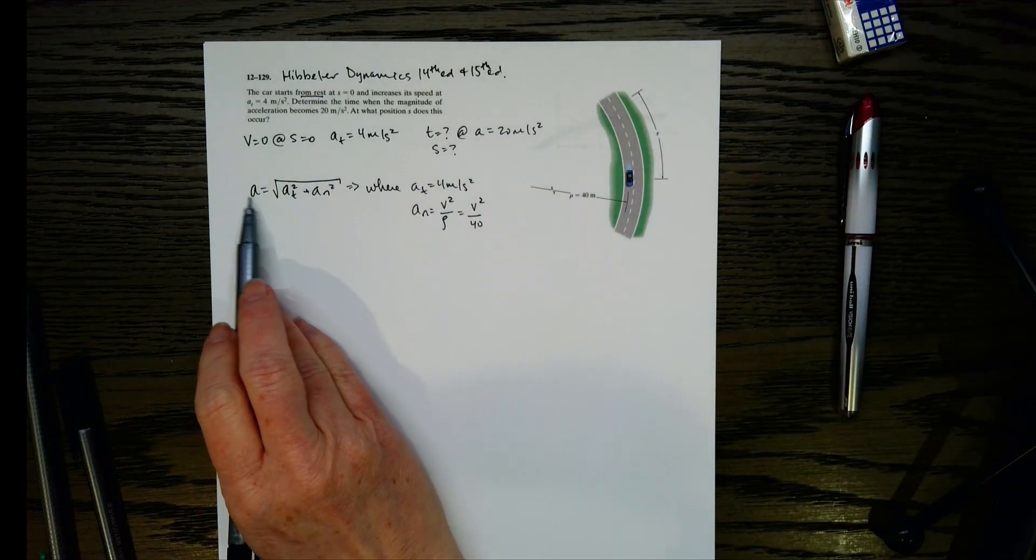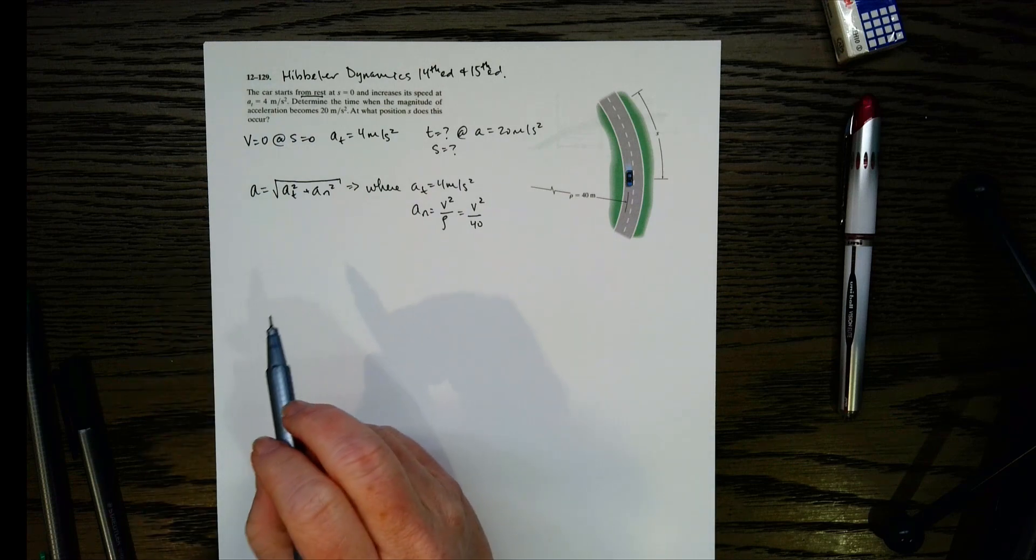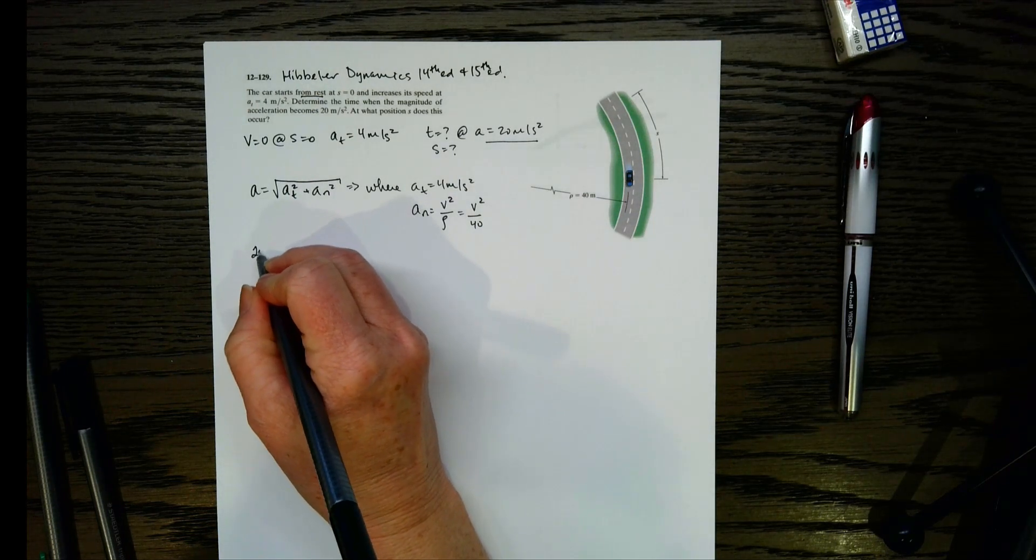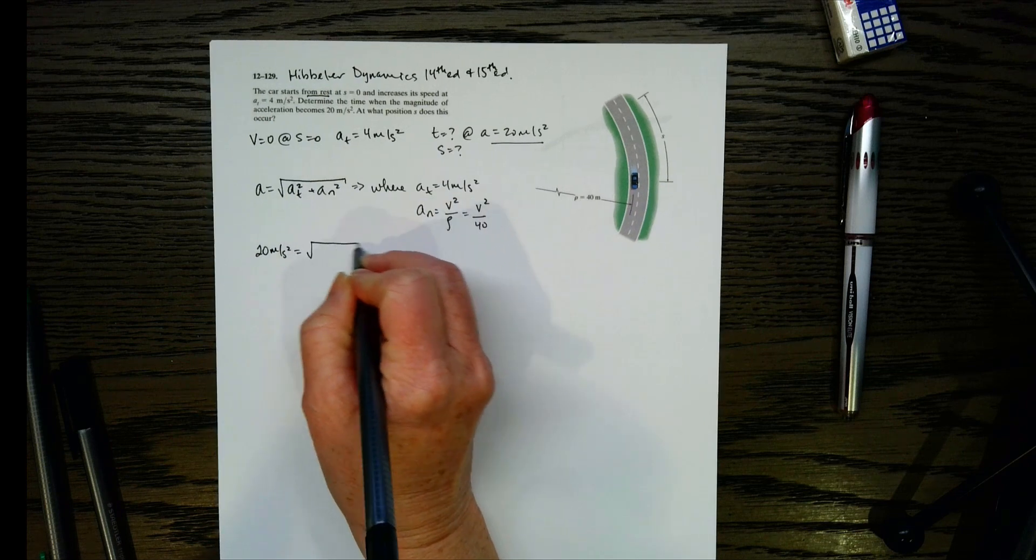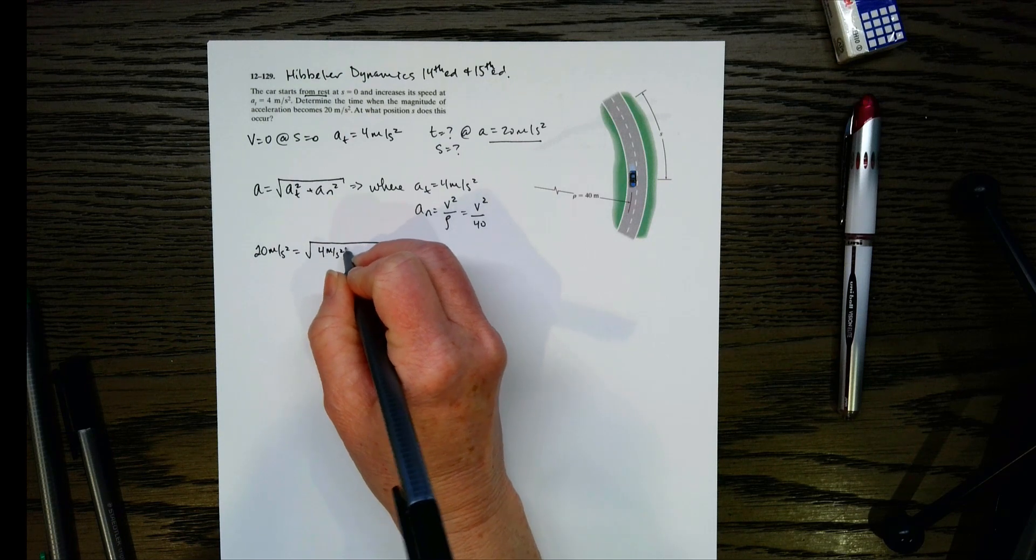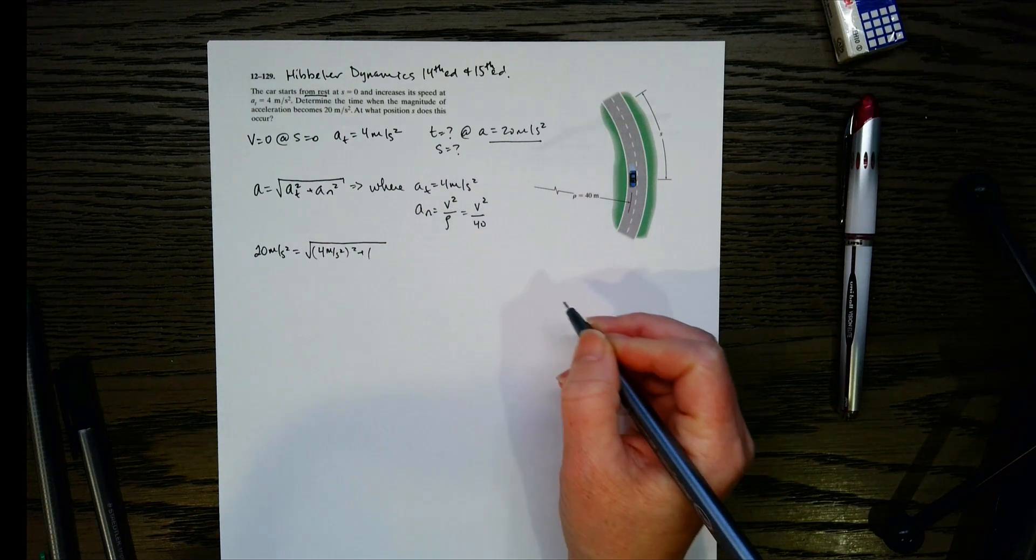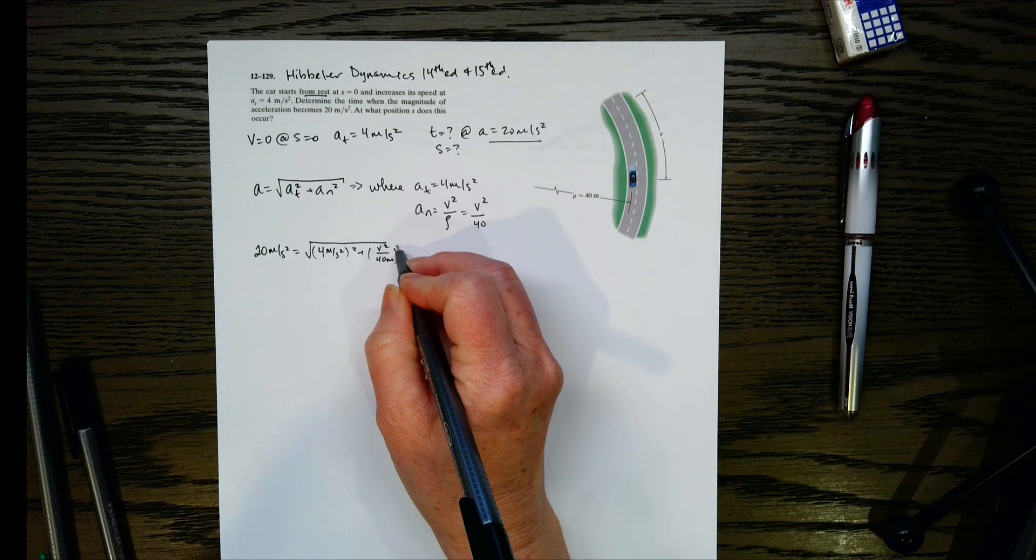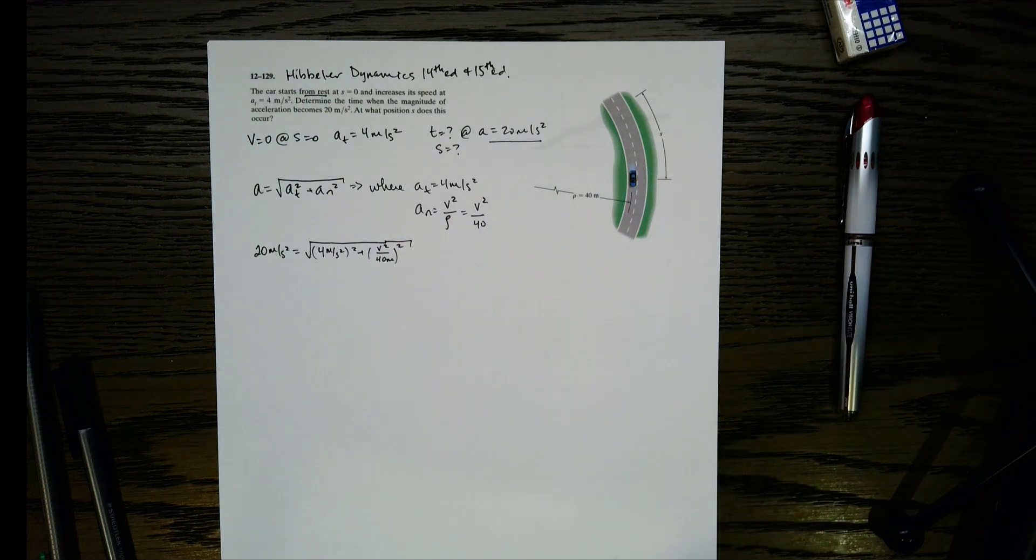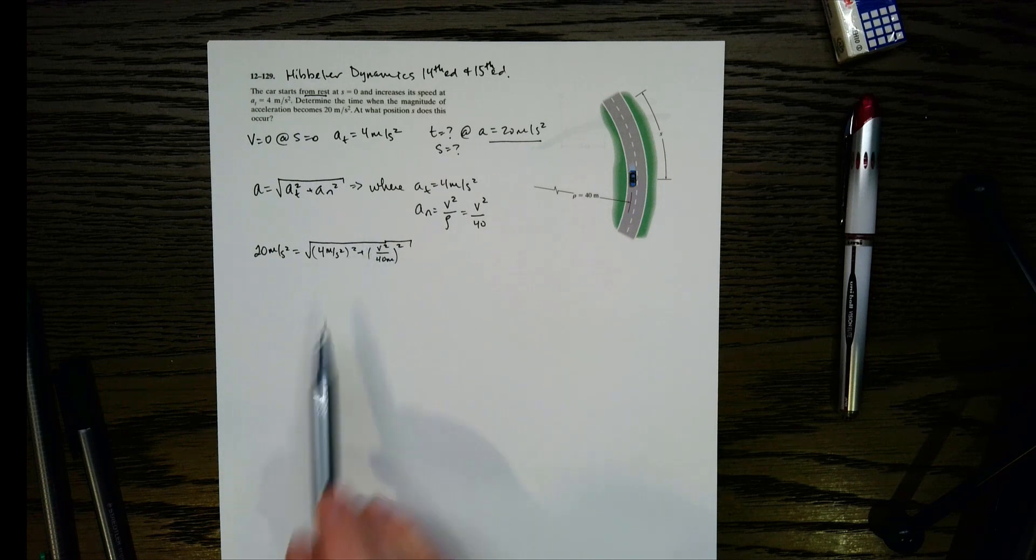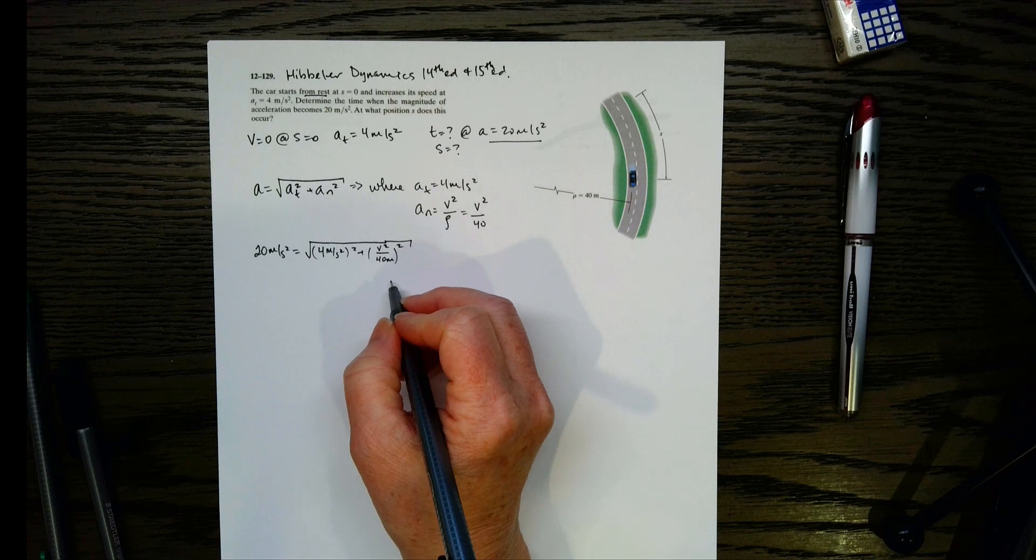And then what about the magnitude value? We do know the magnitude because it said 20 meters per second squared. So let's put all that together. We get 20 meters per second squared equals the square root of 4 squared and then we've got a sub n, so that's v squared over rho which is 40, and then square that. So if we look now, I have one equation, one unknown, where v is my unknown. So if I can get rid of this square root, we can go ahead and solve for v.